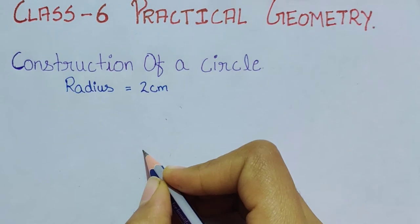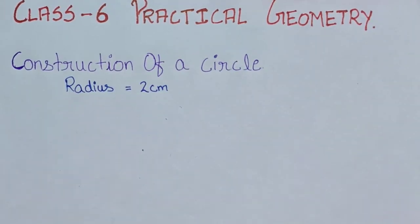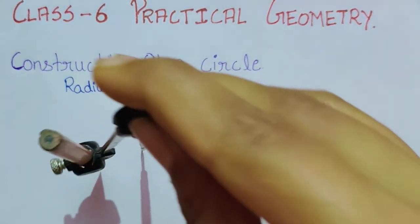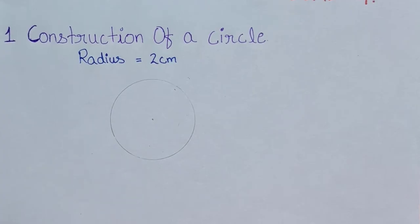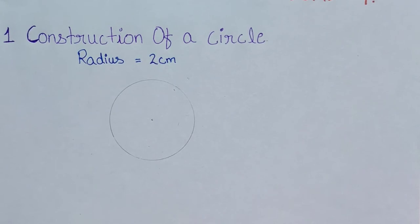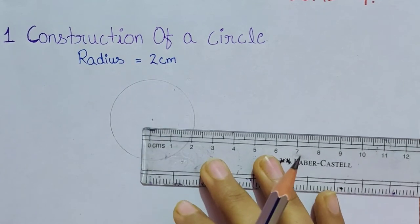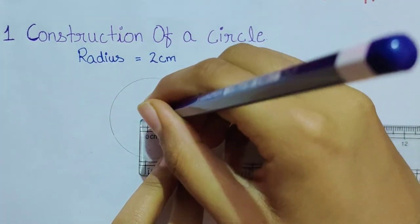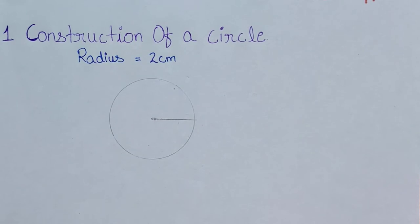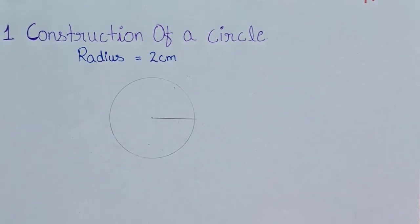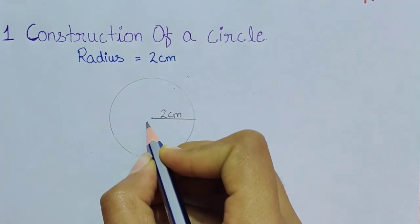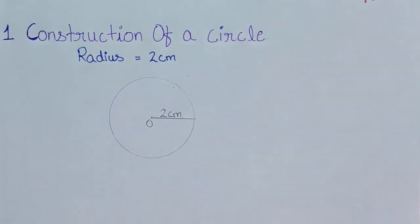We mark a point as the center of the circle. Keep the pointed tip on this center point and draw it 360 degrees to complete the circle. From the center to its circumference, draw a line — this line is known as the radius. The radius of this circle is 2 centimeters, and we name the center as O.